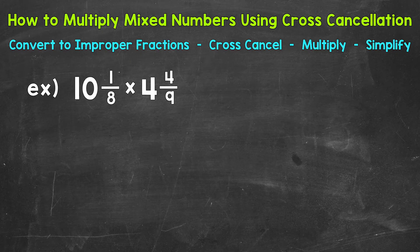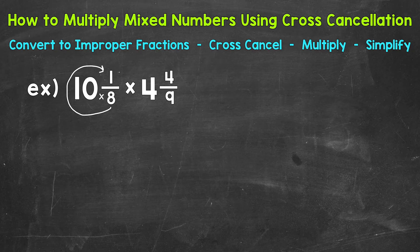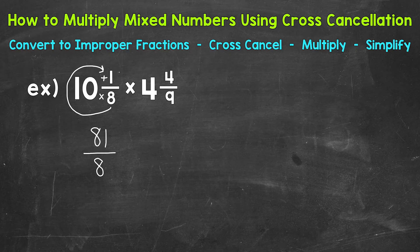That way we just have a numerator and a denominator. We'll start with 10 and 1 eighth. So let's go from the bottom and work our way to the top. We multiply and then add. We do our denominator times the whole number. So 8 times 10, which is 80, plus our numerator, which is 1. So 80 plus 1 is 81. That's our numerator of the improper fraction. We keep our denominator of 8 the same.